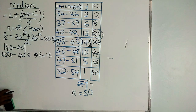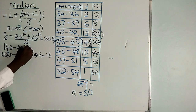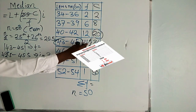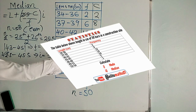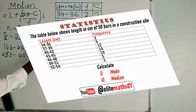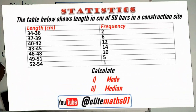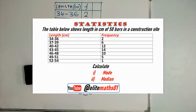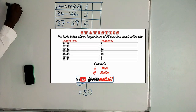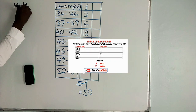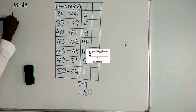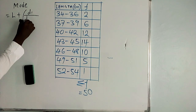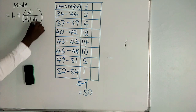So after getting the class interval, what is left is the frequency of this class. Below shows the length of 50 bars in a construction site. This is the table you'll be using to find the mode and the median. For the mode, the formula is: lower class limit of the modal class plus, in brackets, d1 over (d1 plus d2), then multiplied by the class interval.